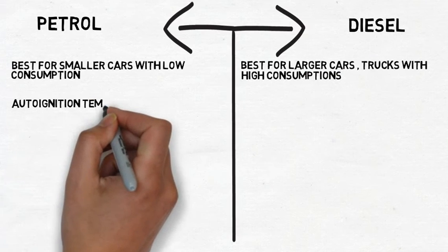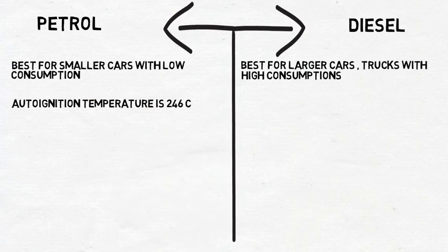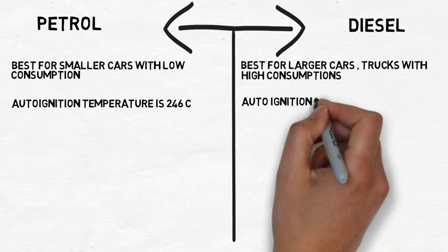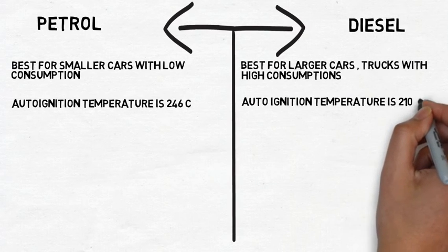The auto ignition temperature of petrol is 246 degrees Celsius, which is why a spark plug is used in a petrol engine, as it is higher than diesel. The auto ignition temperature of diesel is 210 degrees Celsius.